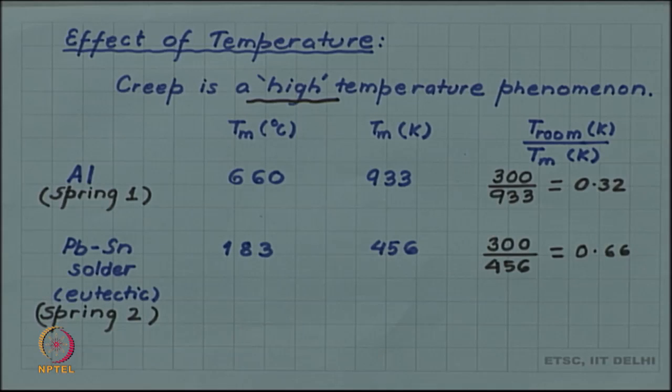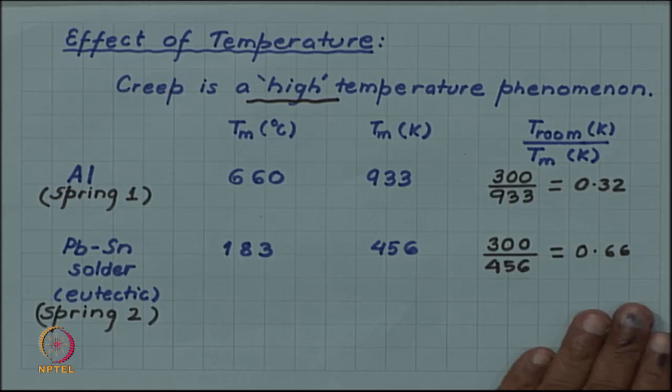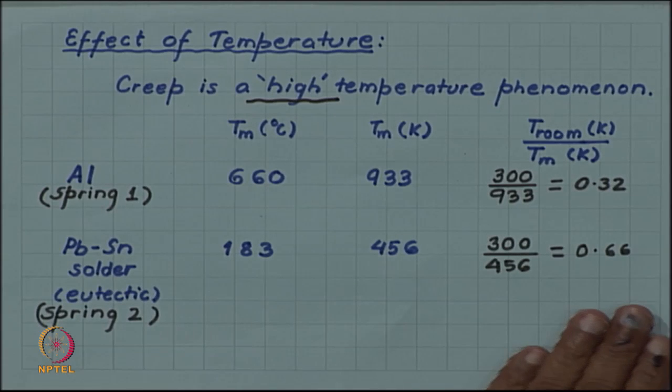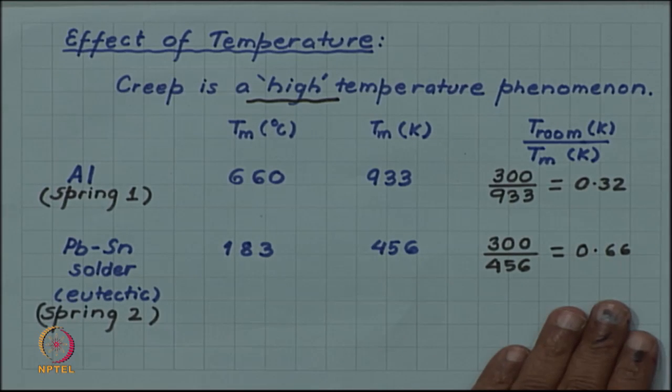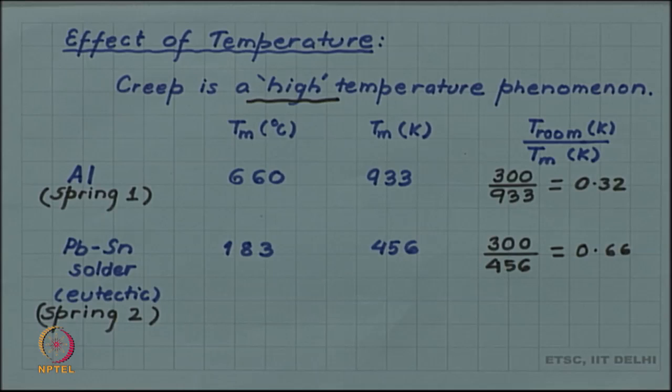The room temperature is 66 percent of the melting point for the solder wire, whereas it is only 32 percent of its melting point for aluminum. The room temperature test is a high temperature test for lead-tin solder, but not so high temperature test for aluminum.